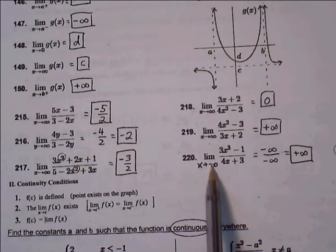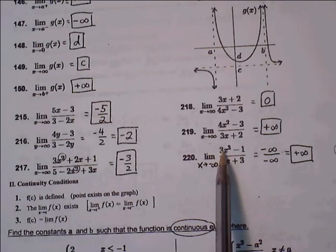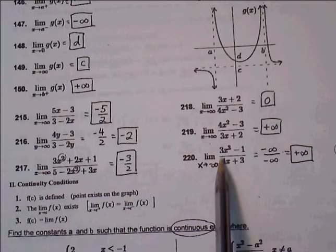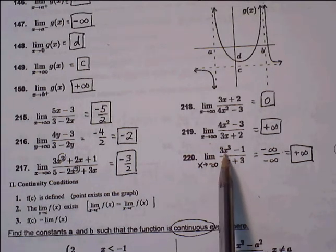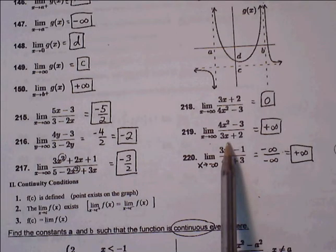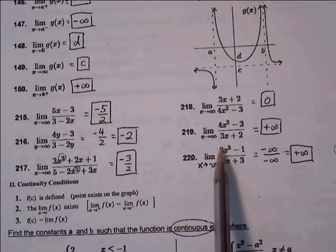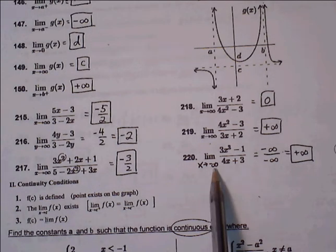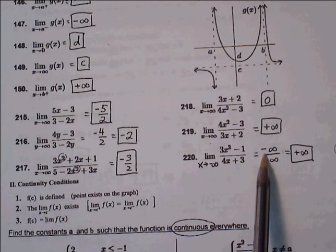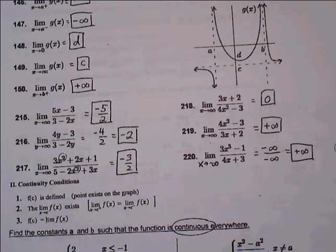220 here. As x approaches negative infinity, again the numerator has a higher degree than the denominator, so we plug in a large negative representative value. In the numerator, we'll get a negative value — negative minus negative is negative. Plugging a large negative value into the denominator also gives a negative value, so negative over negative is positive, therefore positive infinity.